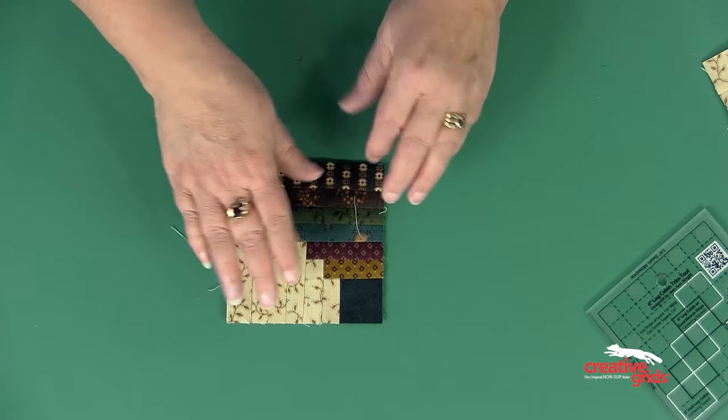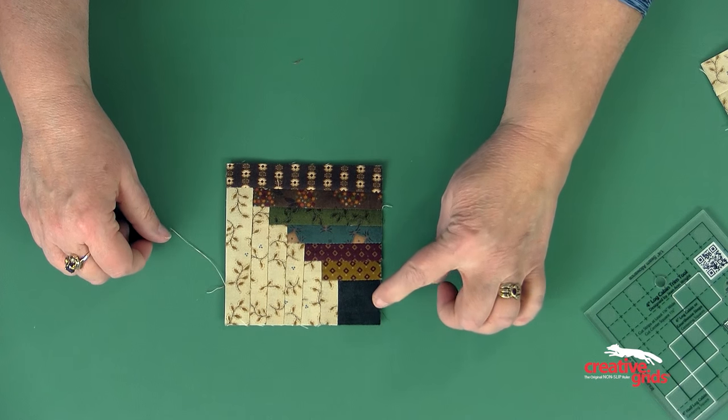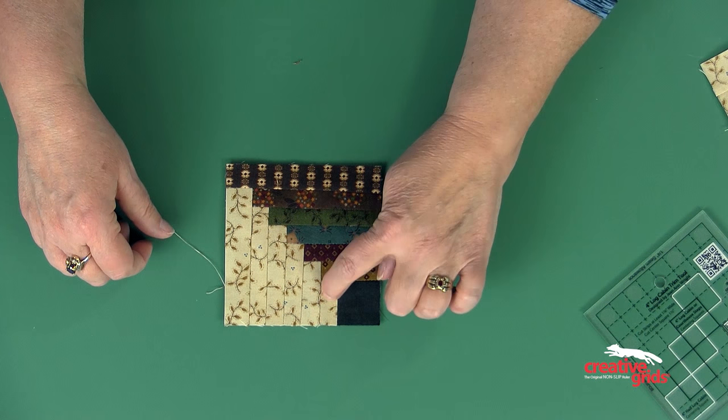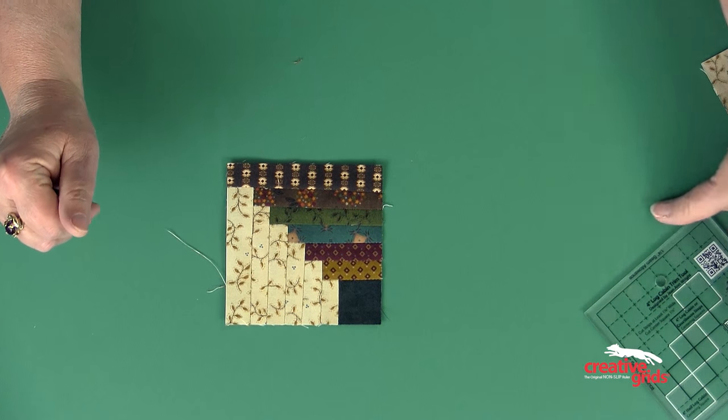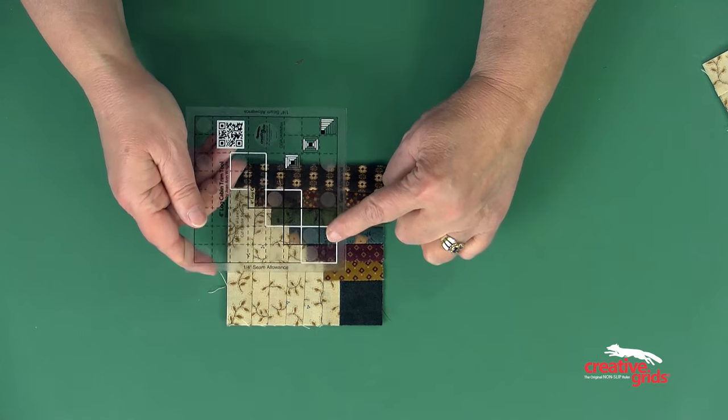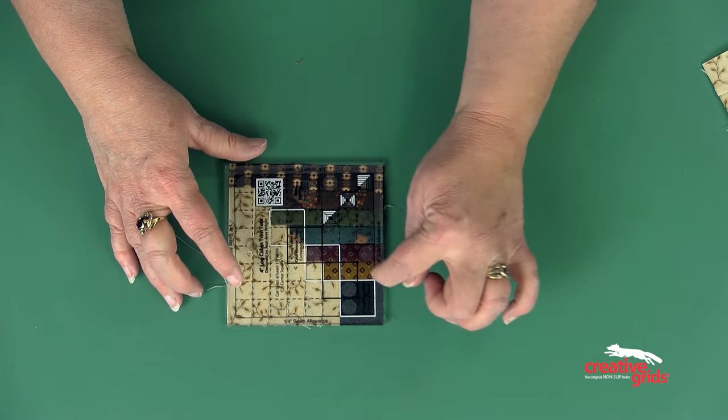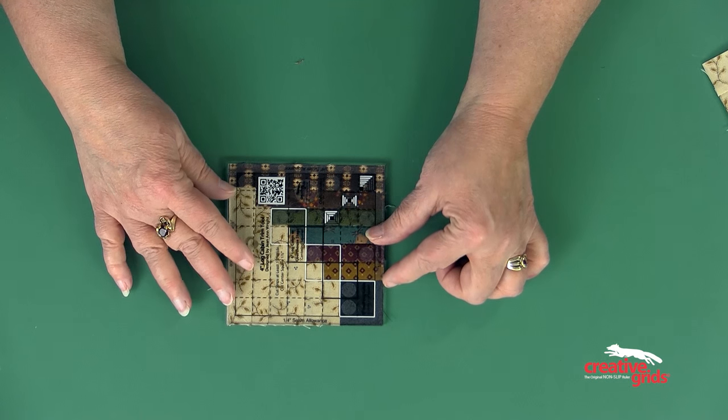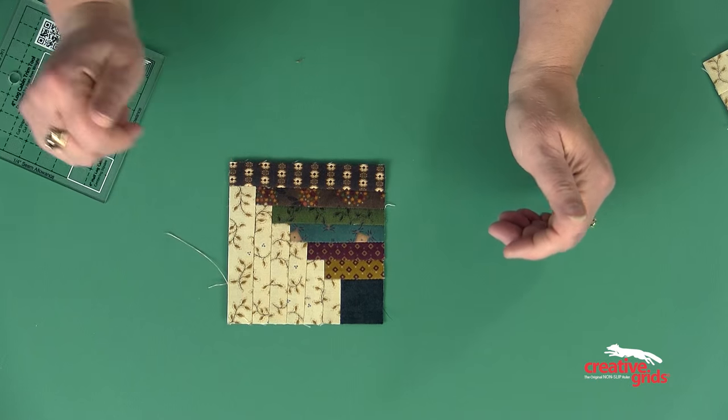The fourth way that you can use this tool is by doing a half log cabin. In a half log cabin, the square stays in the center and you add a light and a dark and trim, a light and a dark and trim, and repeat that process six times. To do this particular block, we've added one square that is down in the corner, because on your final trim you're going to put that so it lines up on the outside edge, trim around the entire outside, and you have a perfect half log cabin.